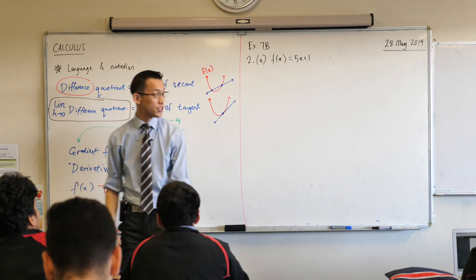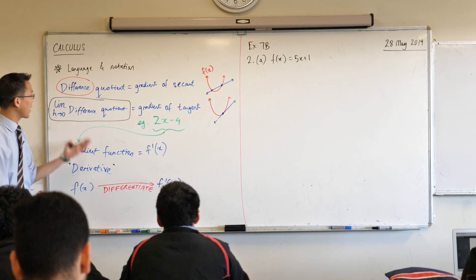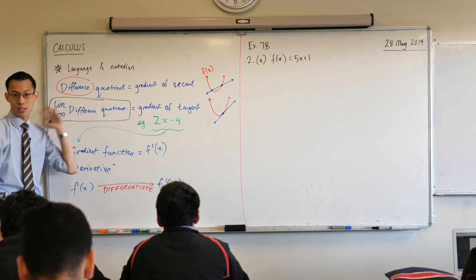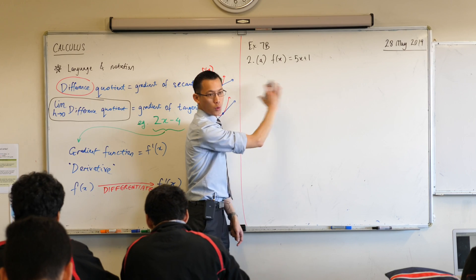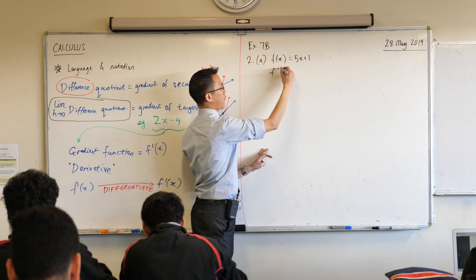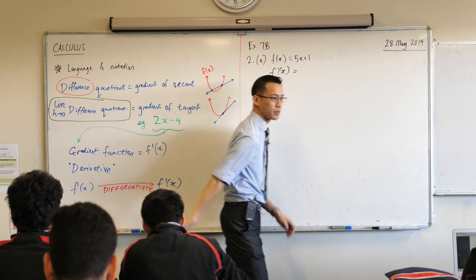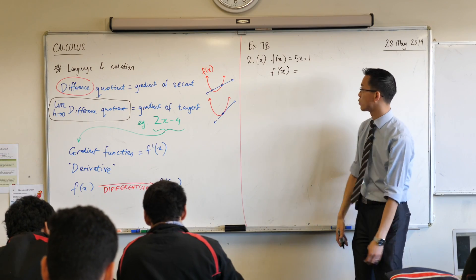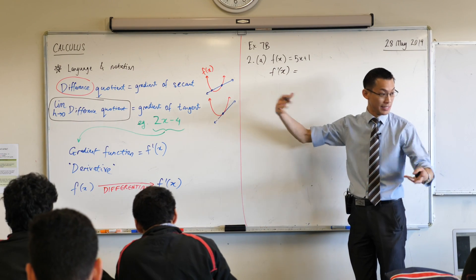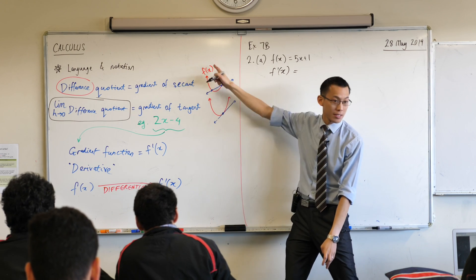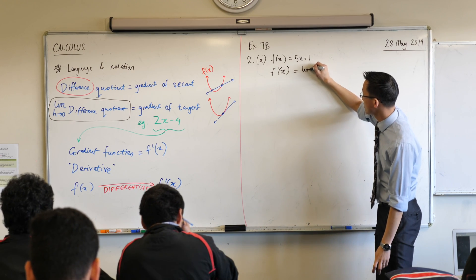So what we're going to do to this thing is we're going to differentiate it and we're going to do it using the process that we did before. So here's what I'm going to write. Instead of saying derivative or gradient or tangent, I'm just going to say f dash x. And then I'm going to say, what's it going to be equal to? Well, do you remember? I have to start off by writing this limit thing, right? I'm thinking about the gradient of a tangent, not a secant, so I always begin by writing this.